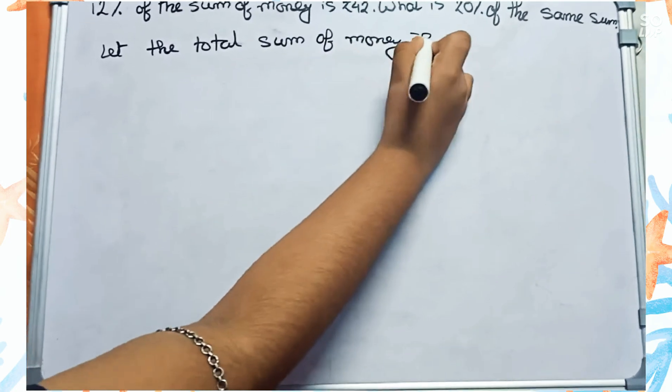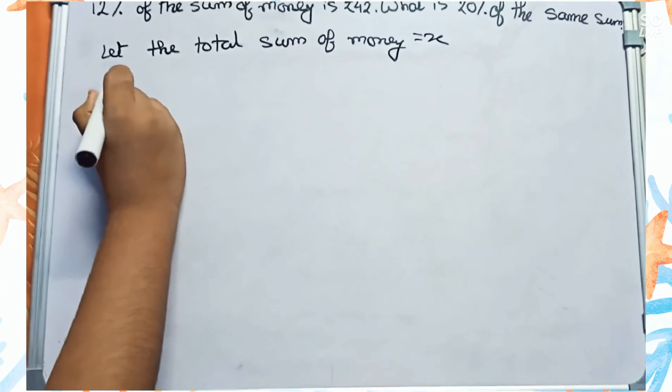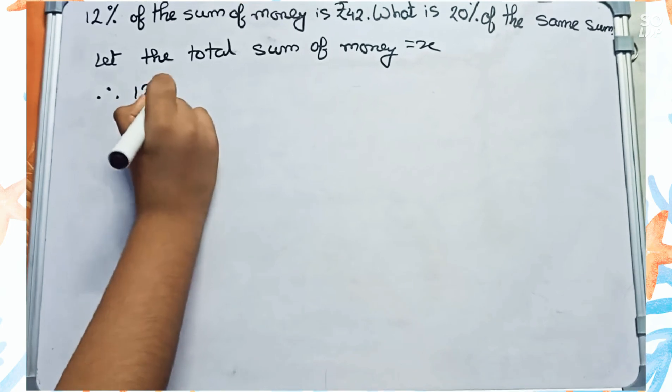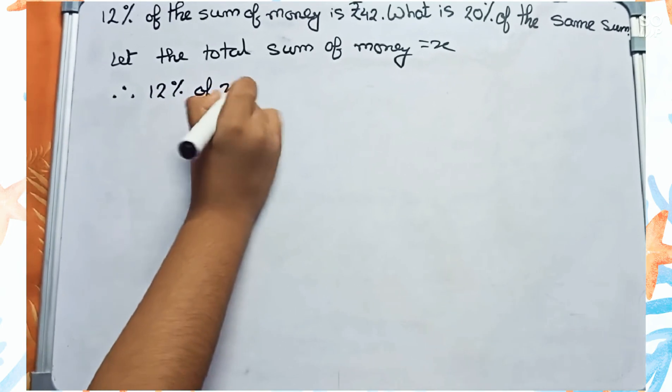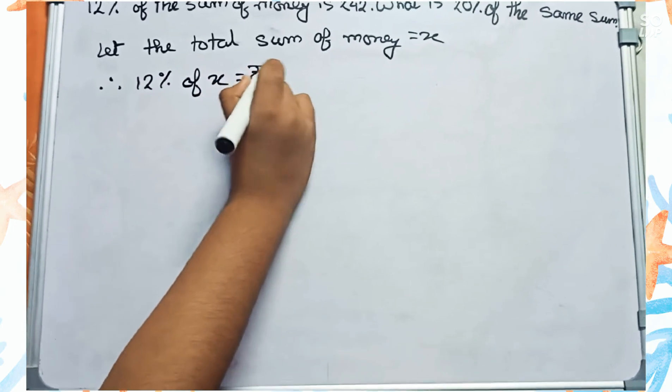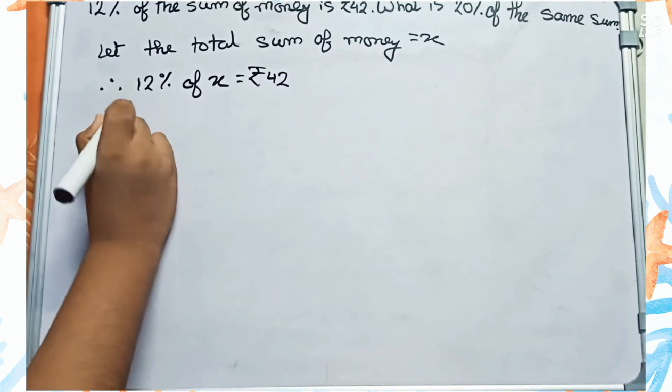So you can also write like this: 12% of X equals to rupees 42, or 12 by 100 of X equals to rupees 42.